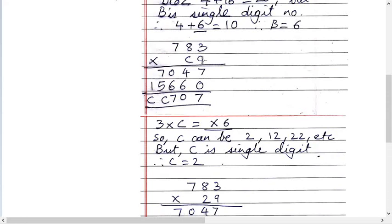It's given that it's only 2 digit number C9. So it can be only 1. C can be a single digit number. That is C equals to 2 only. It can't be 12 or 22. Right?